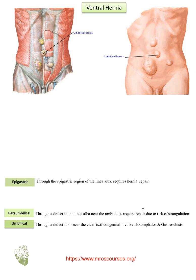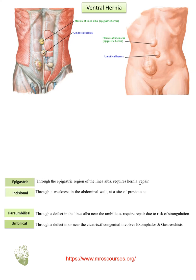Epigastric hernia, also called hernia of the linea alba. It is a defect through the epigastric region of the linea alba and will require hernia repair. As you see here from inside and from outside, this is the hernia of the linea alba — epigastric hernia.